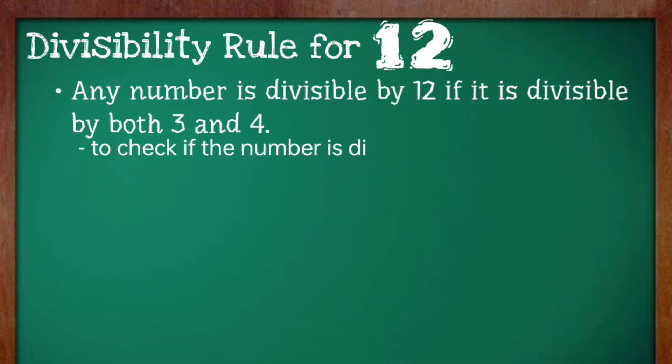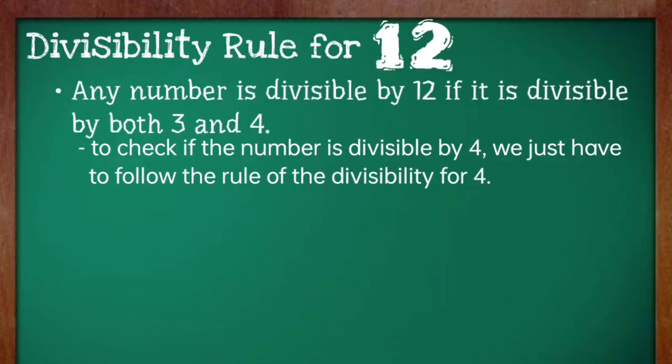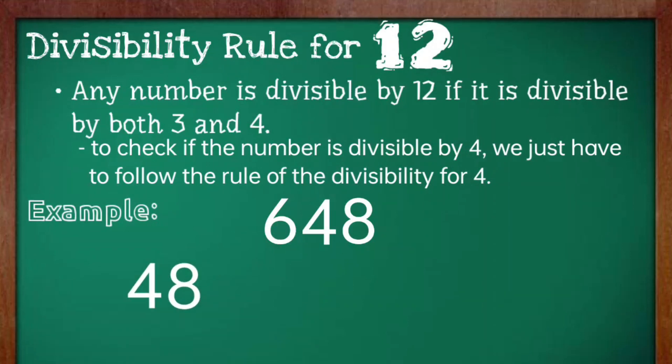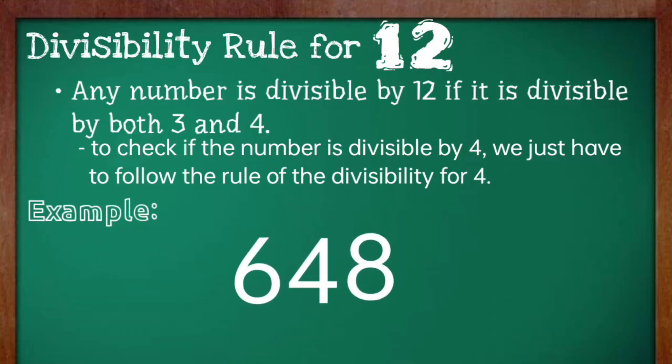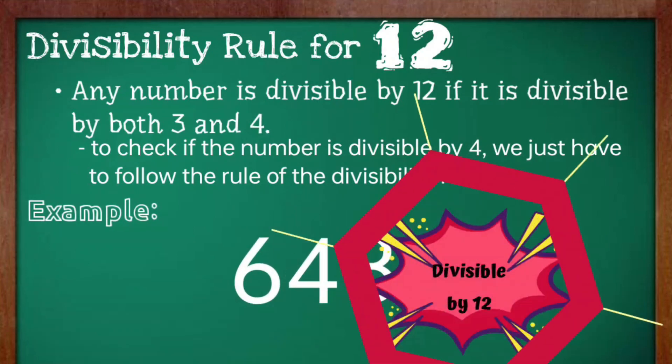To check if the number is divisible by 4, we just have to follow the rule of divisibility for 4. The number 648 is divisible by 4 since the last two digits are divisible by 4. 48 divided by 4 is equal to 12. Hence, the number 648 is divisible by 12.